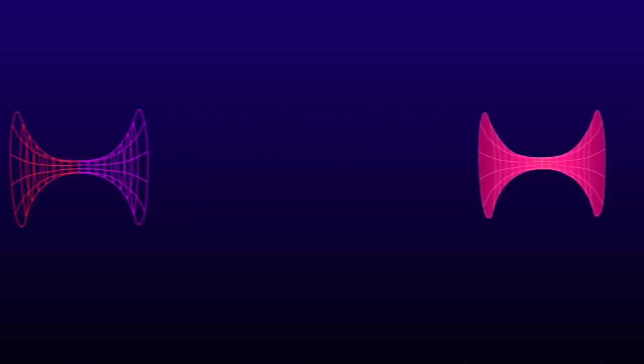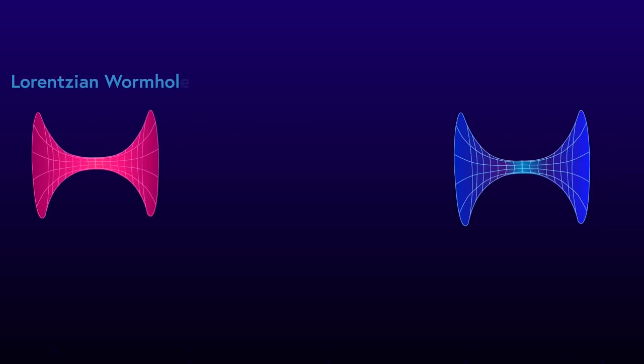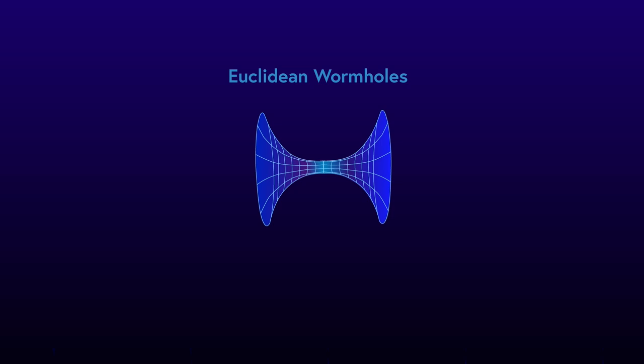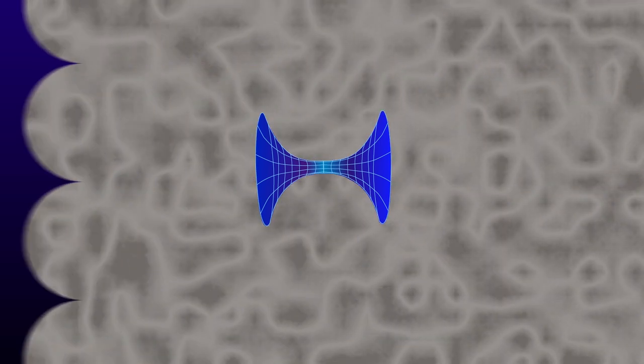Before we go any further, it's important that we understand that there are many different types of wormholes. However, for most physicists, the main two are Lorentzian wormholes and Euclidean wormholes. Euclidean wormholes, often noted as being the weirder of the two, exist in an imaginary time scale.